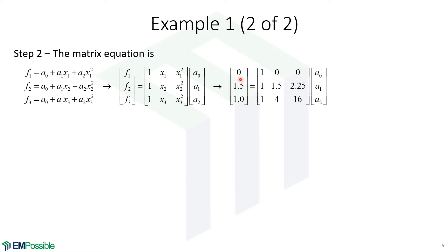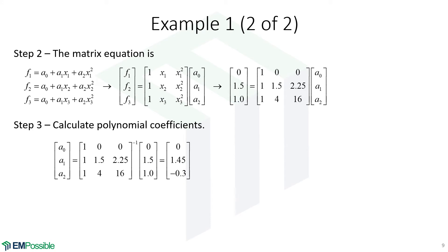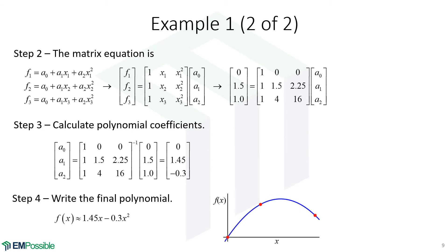Throwing in the numbers that we have, here are our function values. We have ones in the first column of the X matrix, here are our X coordinates, and here are our X coordinates squared. So we're ready to solve for our polynomial coefficients. When we do that, we get zero for our A zero coefficient, 1.45 for our A one coefficient, and negative 0.3 for our A two coefficient. If we plot this, there's our second order polynomial — there is no A zero term because that's zero. And we do see our polynomial passes exactly through those points. If it didn't, we've done something wrong. So it's very easy to fit polynomials to a set of points.